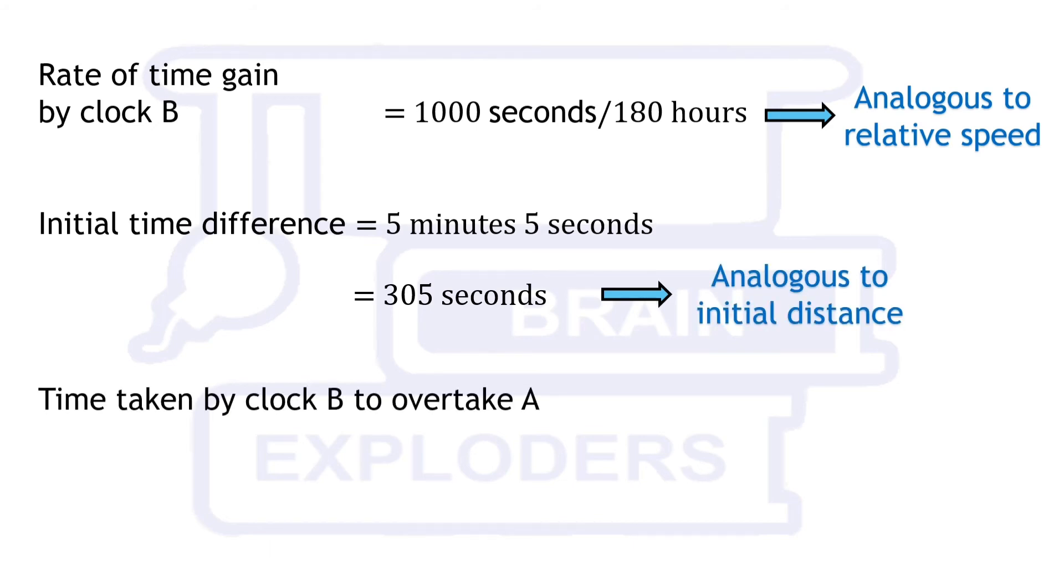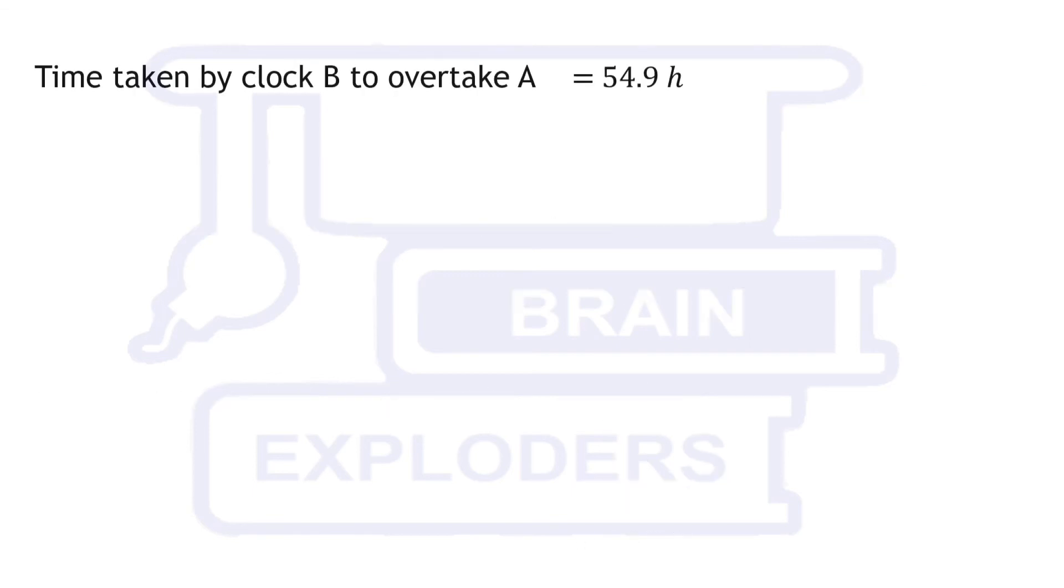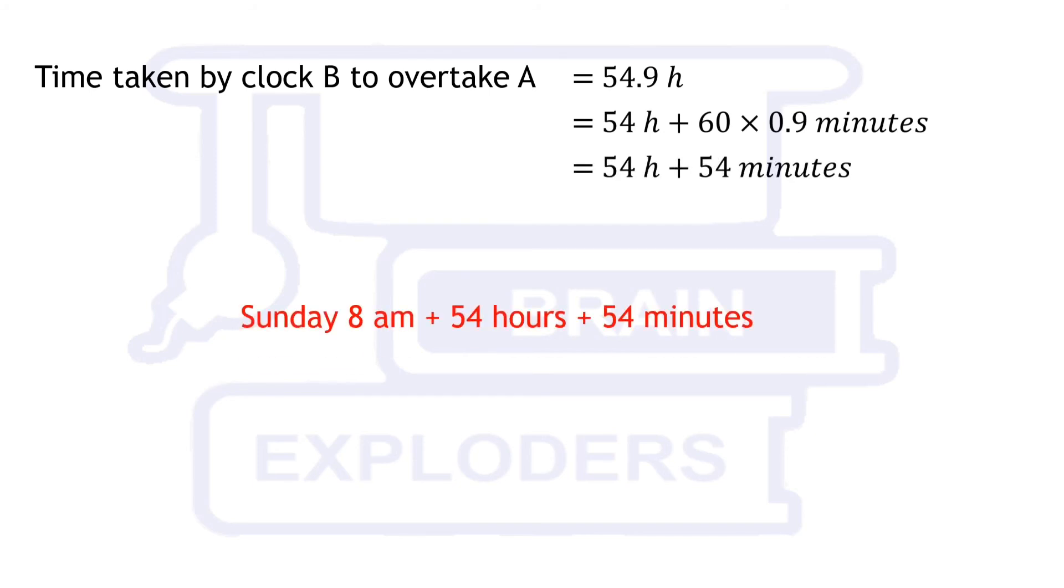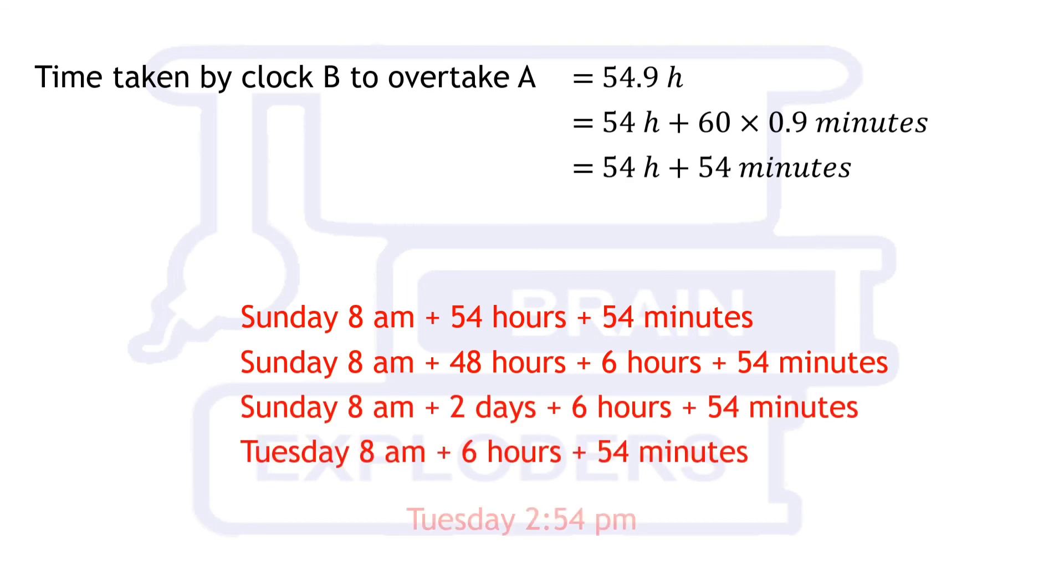Therefore, time taken by B to overtake A is initial time difference over rate of time gain, which comes out to 54.9 hours. 0.9 hours is equivalent to 54 minutes. Adding 54 hours 54 minutes to Sunday 8 am gives us Tuesday at 2:54 pm.